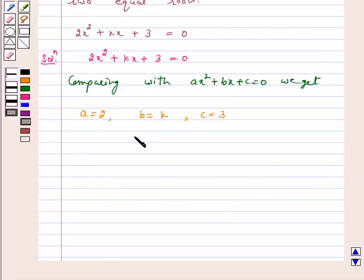Let us first find out the discriminant, that is b² - 4ac. This is equal to k² - 4 × 2 × 3, which is equal to k² - 24.